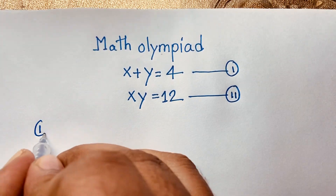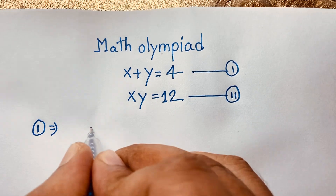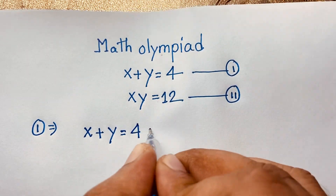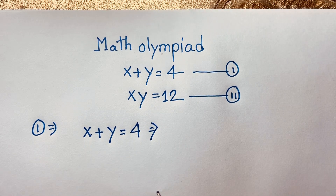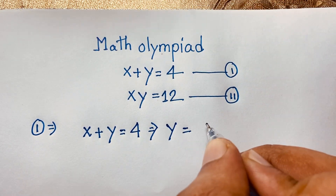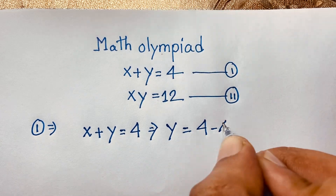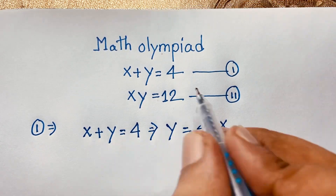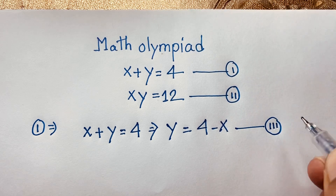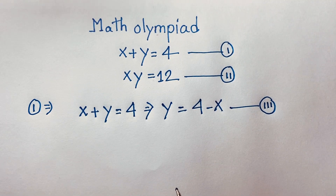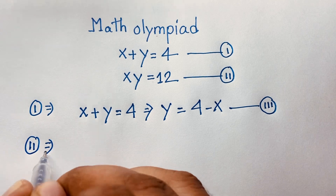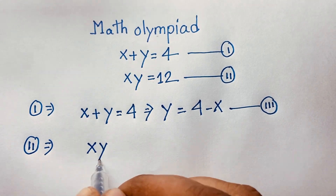According to the first equation, x plus y is equal to 4. We rearrange to get y is equal to 4 minus x — I moved x to the other side so it becomes negative x. This is our third equation.